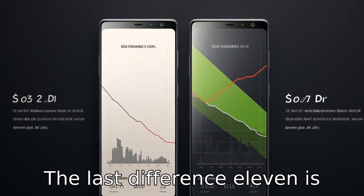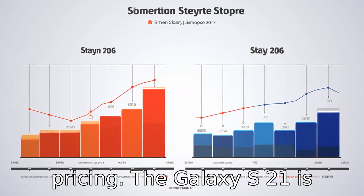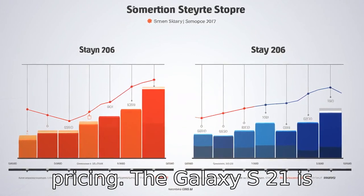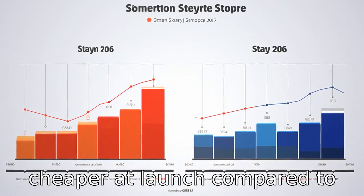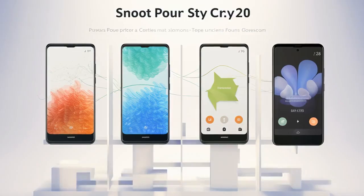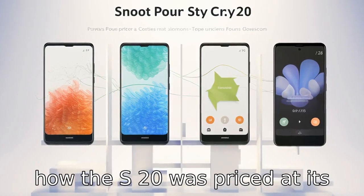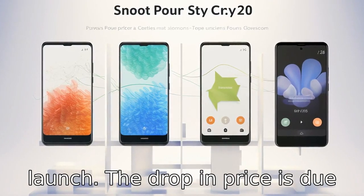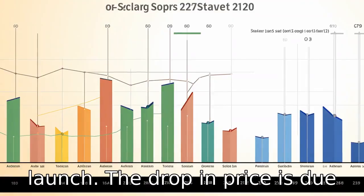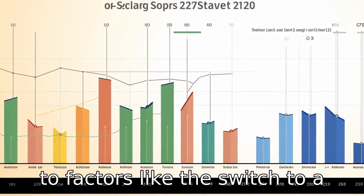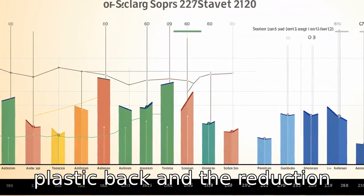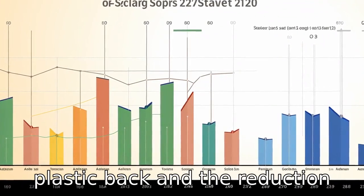The last difference, number eleven, is pricing. The Galaxy S21 is cheaper at launch compared to how the S20 was priced at its launch. The drop in price is due to factors like the switch to a plastic back and the reduction of display resolution.